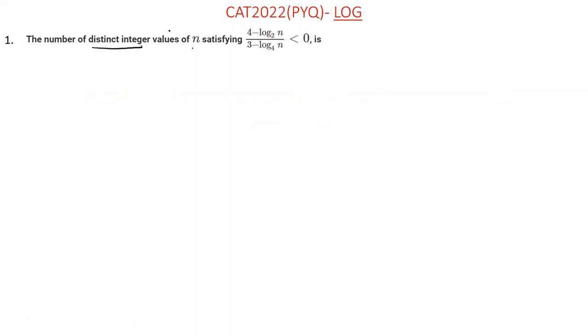The number of distinct integer value of n satisfying 4 minus log into the base 2, 3 minus log into the base 4, less than equal to zero. The question is this. Is the question difficult to go to the base 2 minus 3 log into the base 4 less than zero? Okay, here log into the base 2, log into the base 4, this form log into the base 2.